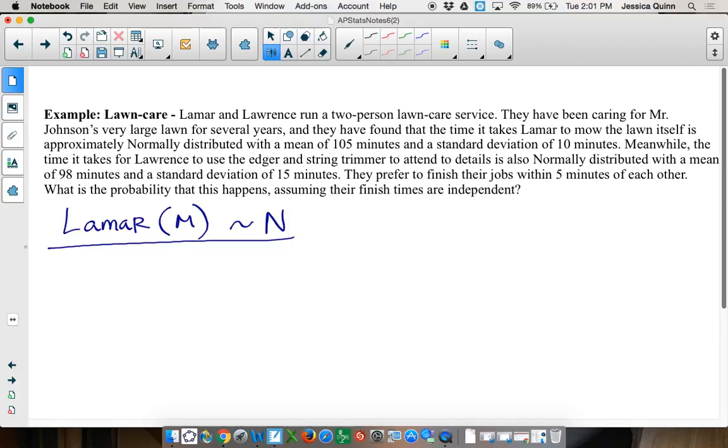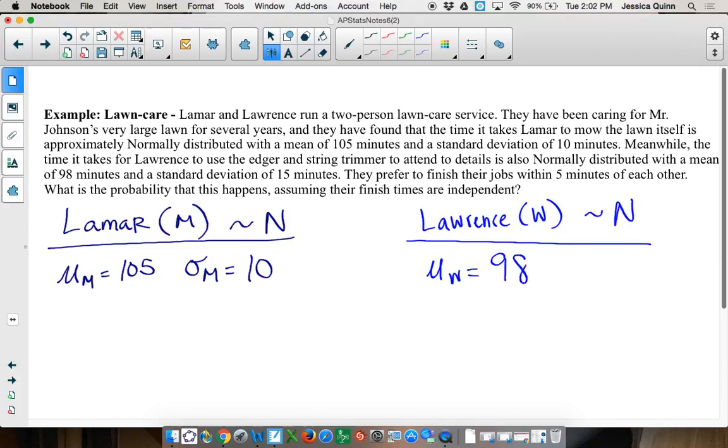Lamar is approximately normal. What's the mu for Lamar? 105. And what's our standard deviation for Lamar? 10 minutes. Then over here, we got Lawrence. So shall we call him W? Isn't it interesting how even the first letters that are different in their names are just like the reflection of each other? Maybe they're twins. Okay, so for Lawrence, the average time it takes Lawrence is 98, and the standard deviation for Lawrence is 15 minutes.